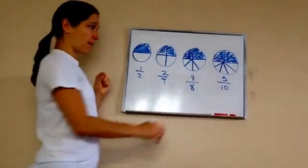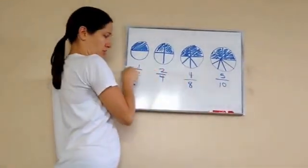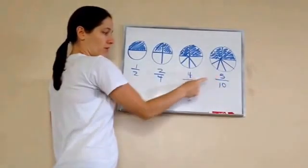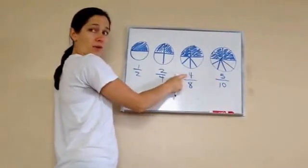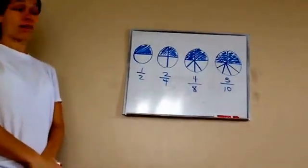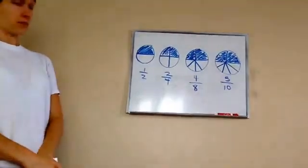Now, what I want you to see is let's look at the numbers. What do you notice about this number and this number? What do you notice about this number and this number? They're all even. Okay, they are all even, very good.